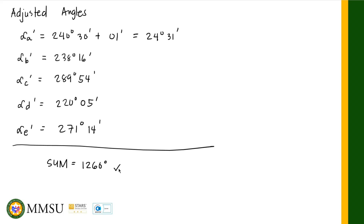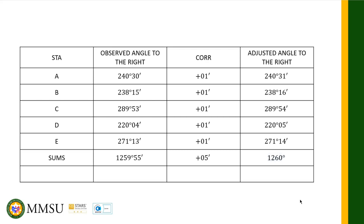Finally, let us tabulate the solution. The table has four columns: the stations, the observed angle to the right (given values), the correction of +01 minute added to every angle, and the adjusted angle. The sum of the adjusted angles should equal (n+2) times 180 degrees. That's it for angle to the right traverse. If you have any questions, you can ask through our Facebook group, email me, or comment on this video. See you in our next lesson.